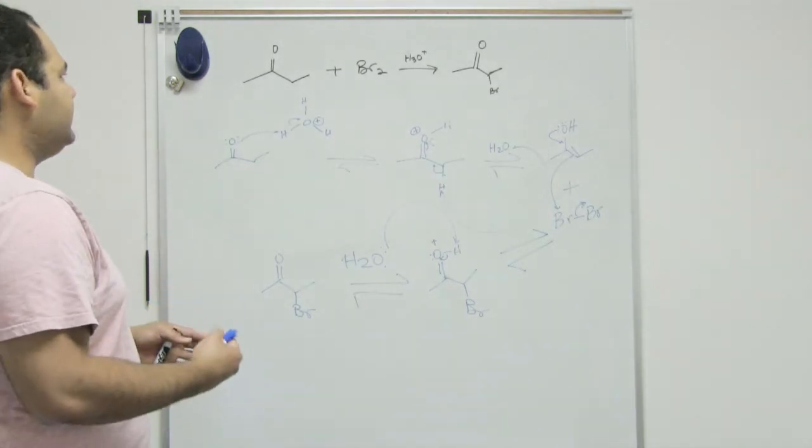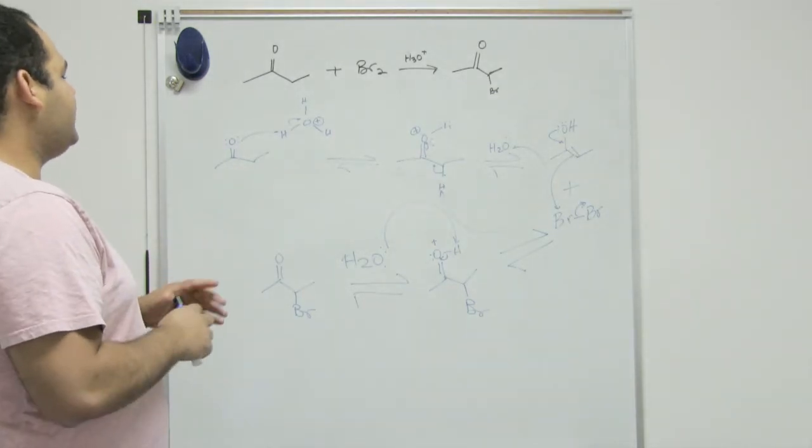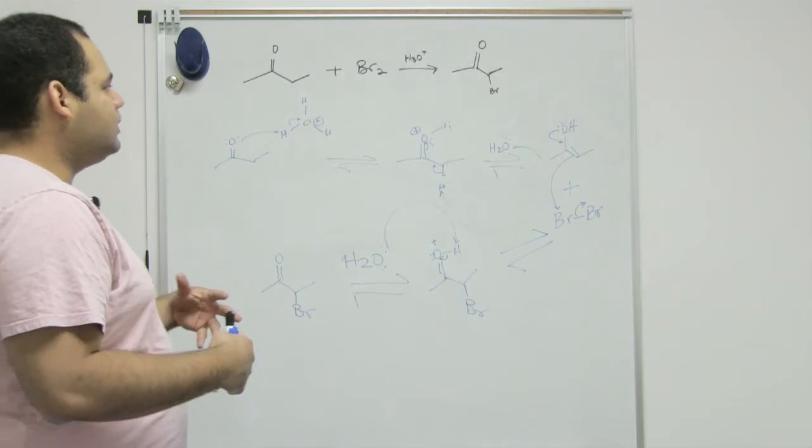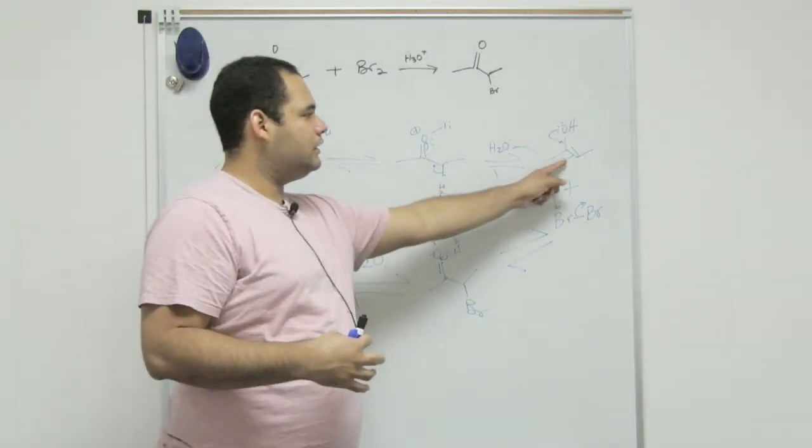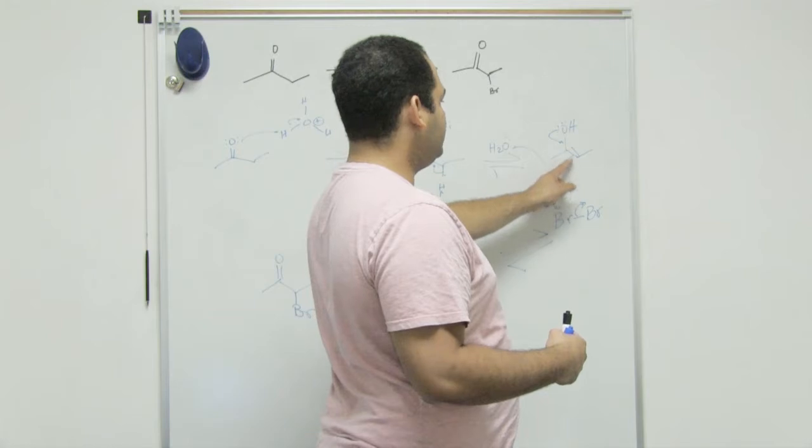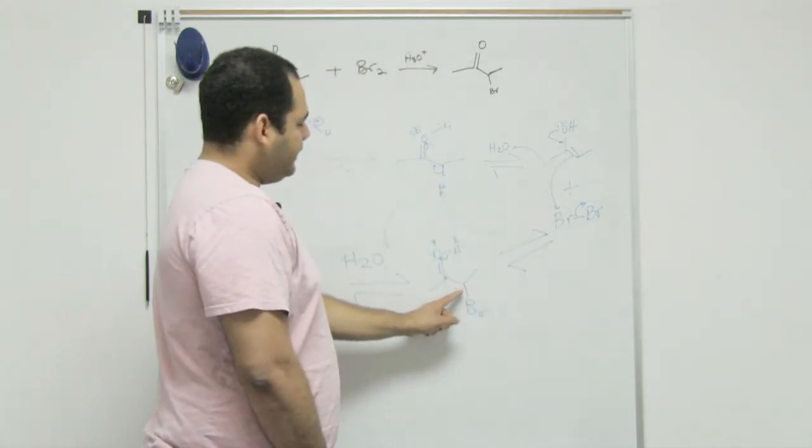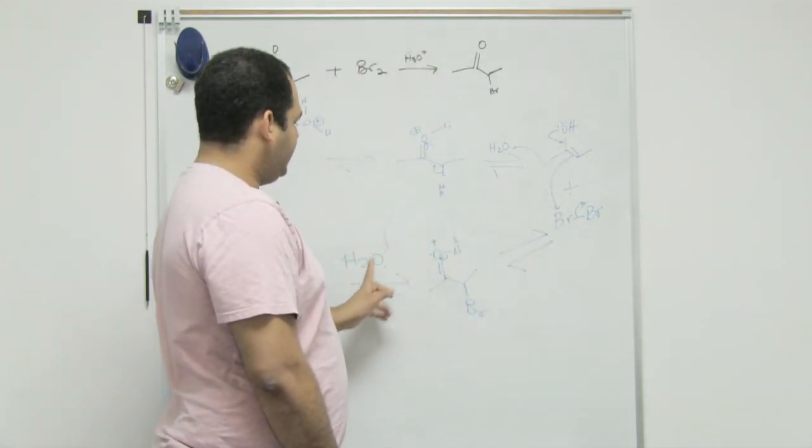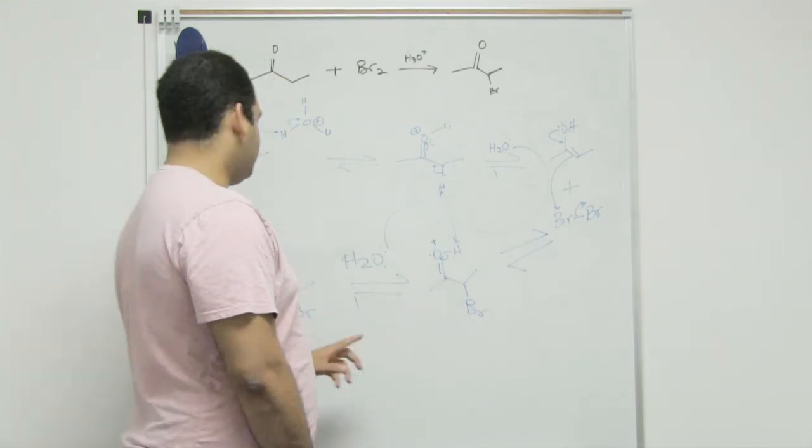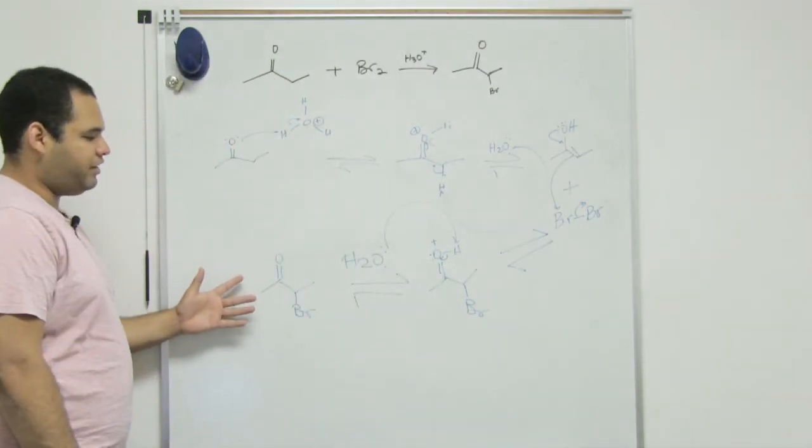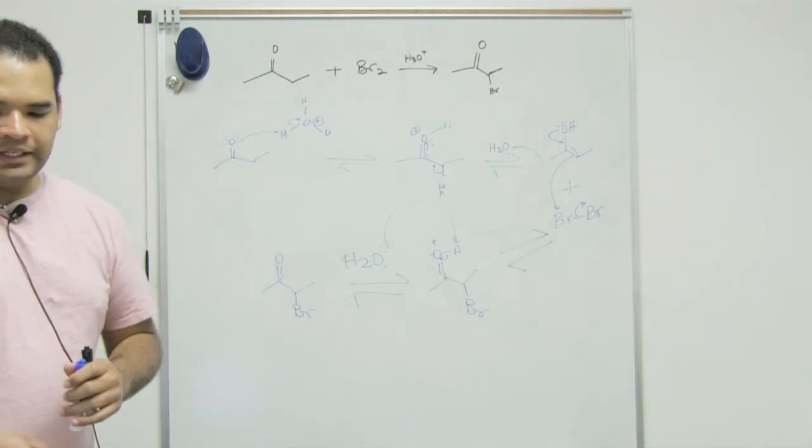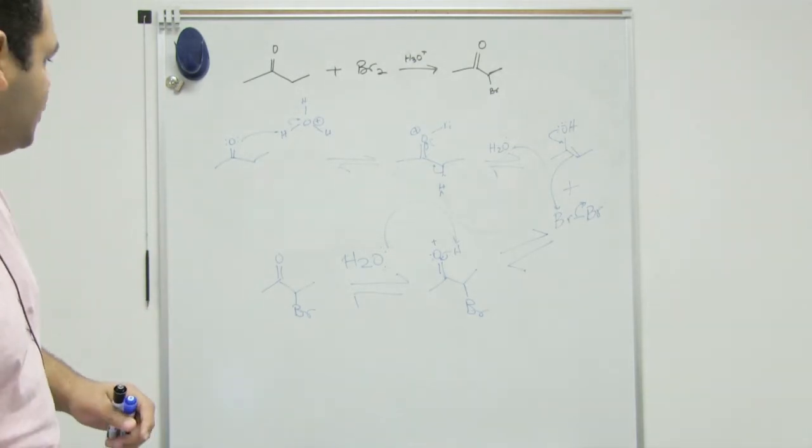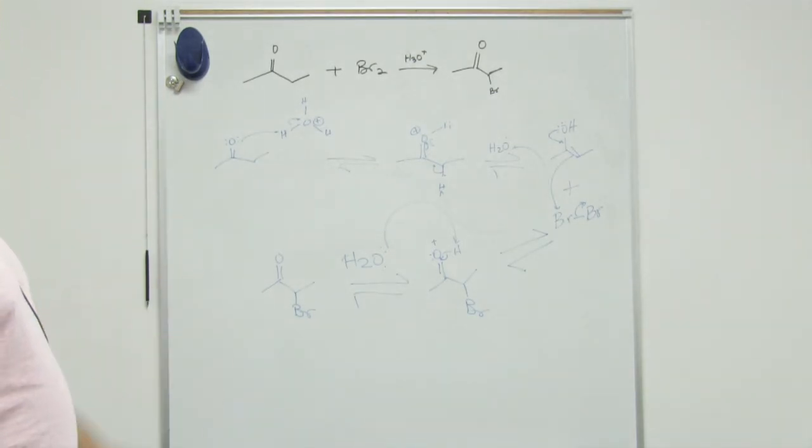So, basically, under acid conditions, we could have an aldehyde or ketone, form an enol, and then we collapse this bond, grab one of the halides, add it to the alpha carbon. And then a molecule of water, we deprotonate it to stabilize the molecule and then get our final product where the halide is added to the alpha position. We'll see you next time.